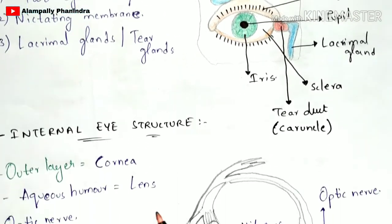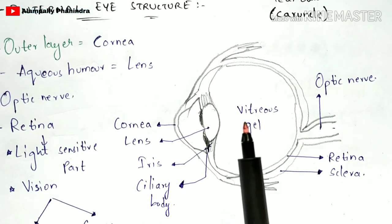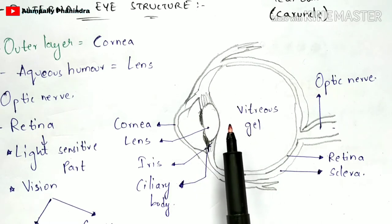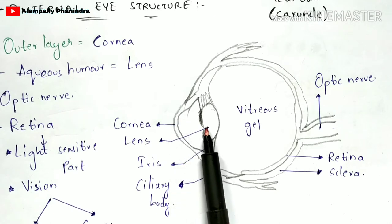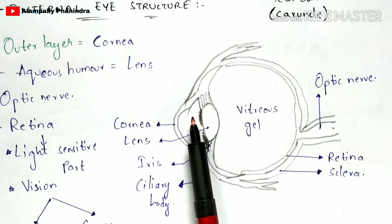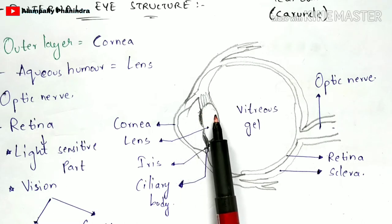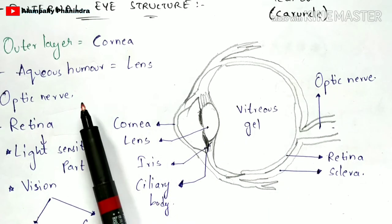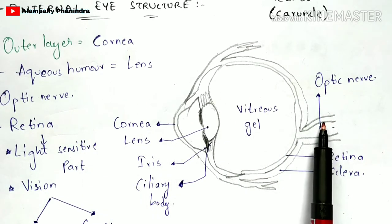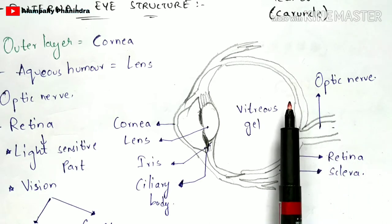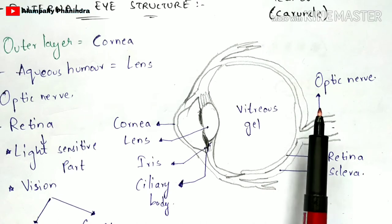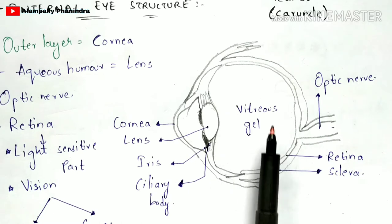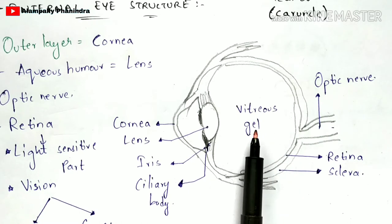Now let us learn about the internal structure of the eye. The outer layer is lined with the cornea, and the back side of the cornea has aqueous humor. Inside the aqueous humor there is a lens. There is also the presence of the optic nerve, which mainly helps in the transmission of signals — it sends signals from the eye to the brain. Next is the retina, which plays a major role in the vision of the eye and is called a light-sensitive part.